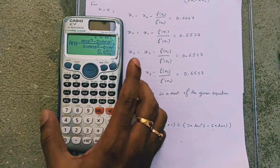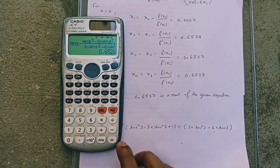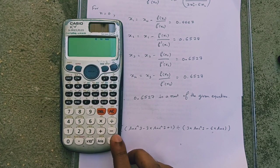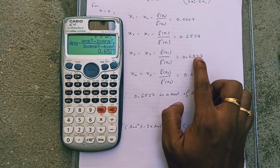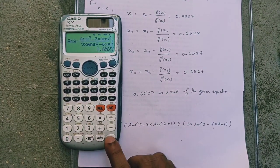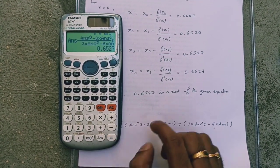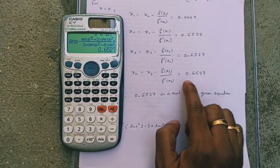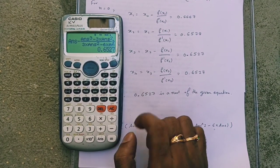To get the next approximation x3, just press equals. You get the next approximation 0.6527. To get the next approximation, again press equals. You get 0.6527. That is the fourth approximation.